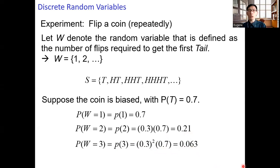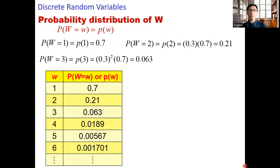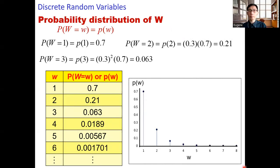The calculation goes on for W equals 4, 5, 6, and so on. The probability distribution of W can be expressed as a table — which goes on forever — or as a graph. On the horizontal axis we have W; W equals 1 has probability 0.7, W equals 2 has probability 0.21, and the probabilities continue decreasing for W equals 3, 4, 5, 6, 7, and so on.